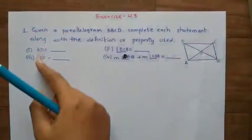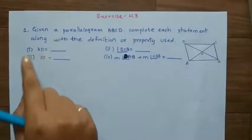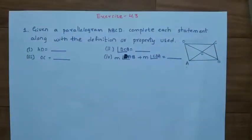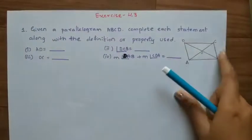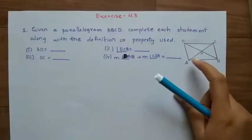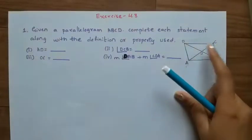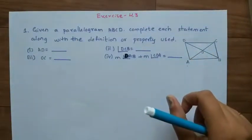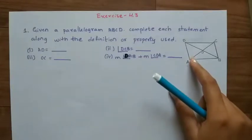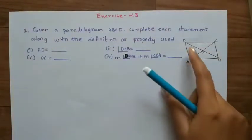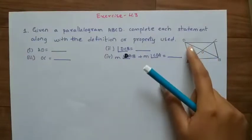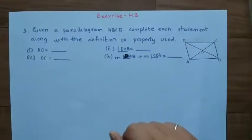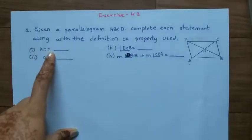Before going to solve this, just recall all properties of a parallelogram. First, opposite sides are equal and they are parallel. Second, opposite angles are equal. Third, the sum of adjacent angles of a parallelogram is 180 degrees. Fourth, the diagonals bisect each other. And the diagonals are equal. These are the properties of a parallelogram.